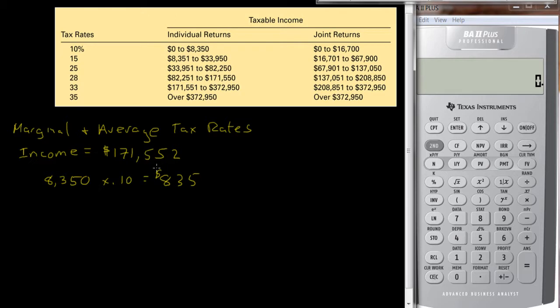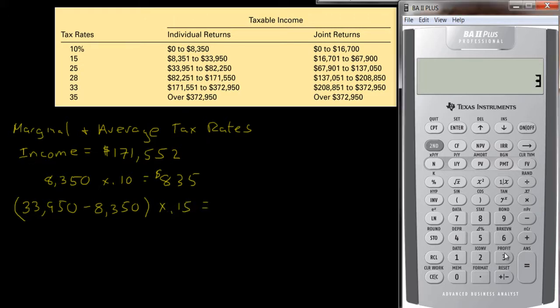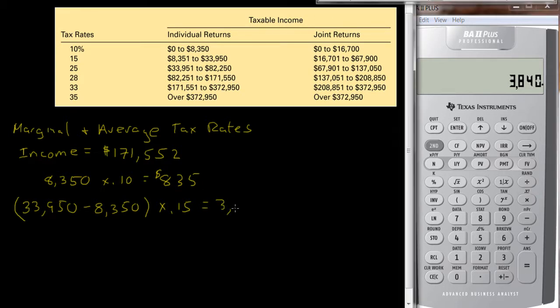Then they're going to get taxed on the next amount of money, so if you take $33,950 and you subtract $8,350, that's going to be taxed at 15%. So let's see what that is, $33,950 minus the $8,350, so this extra $25,600 will be taxed at 15%, so the next amount is $3,840.